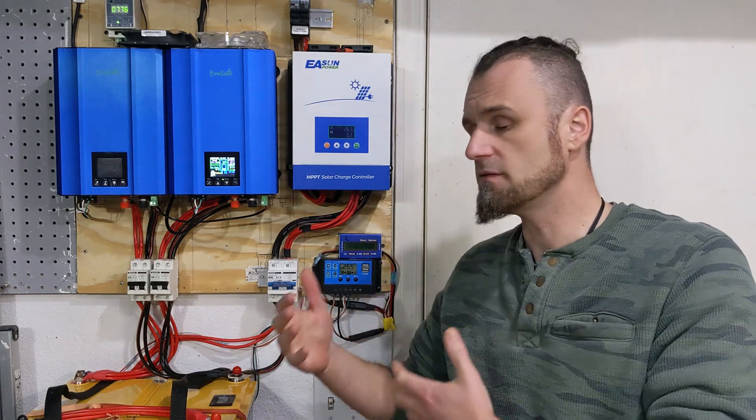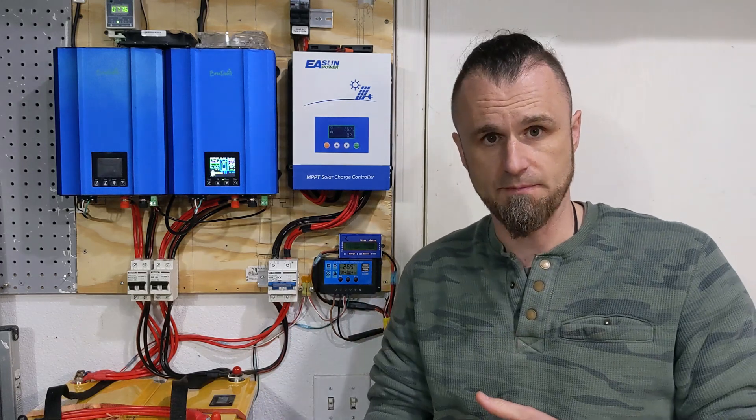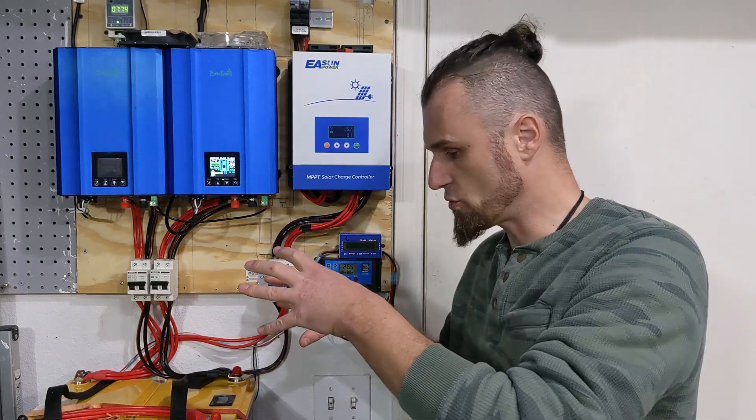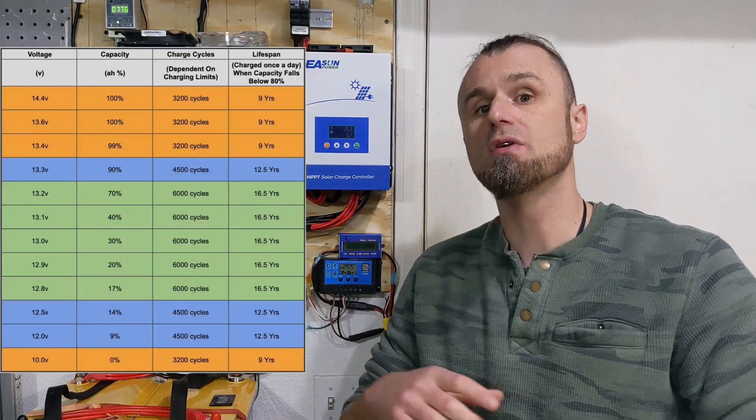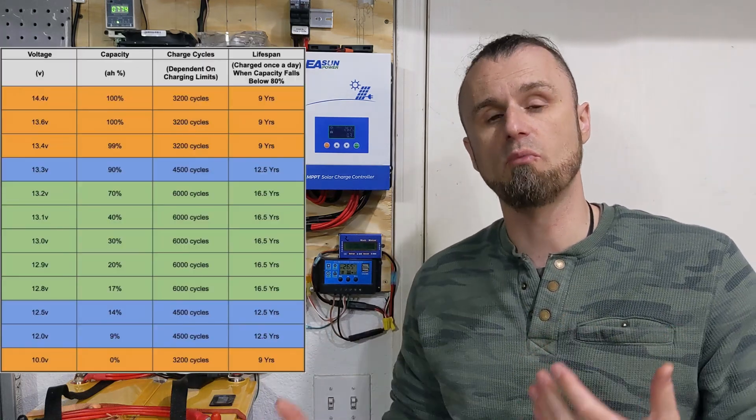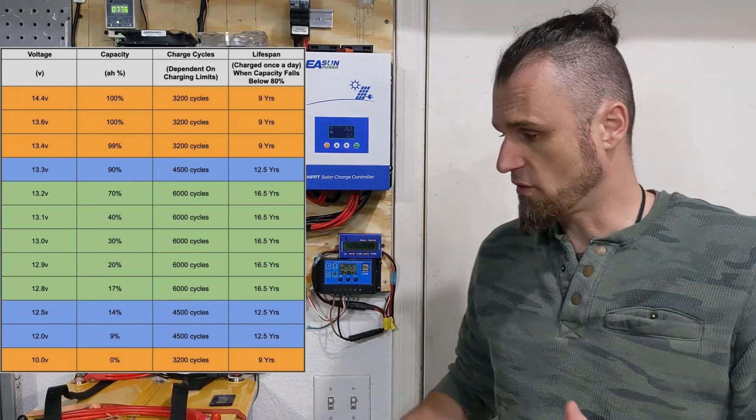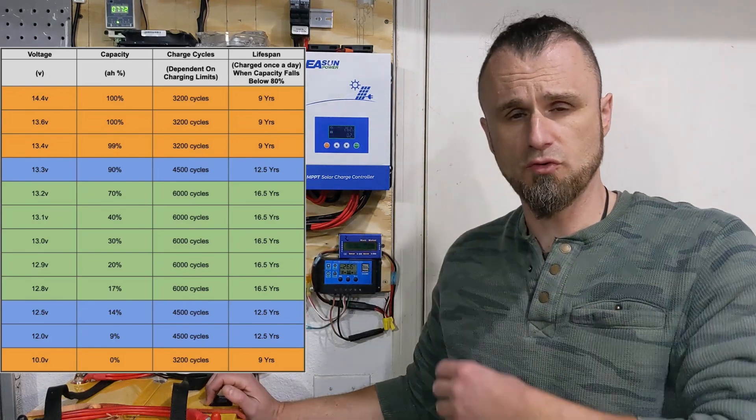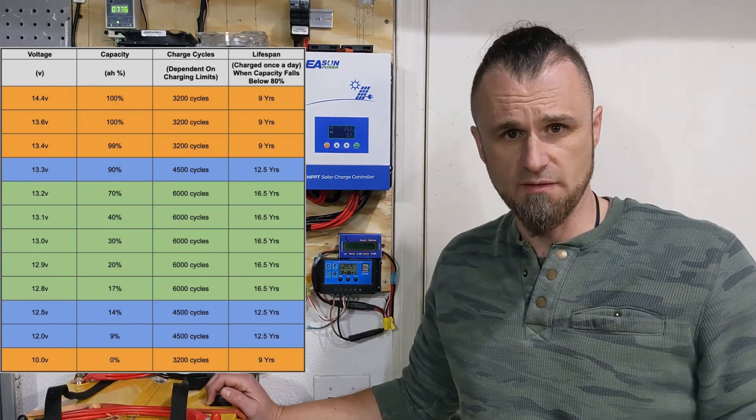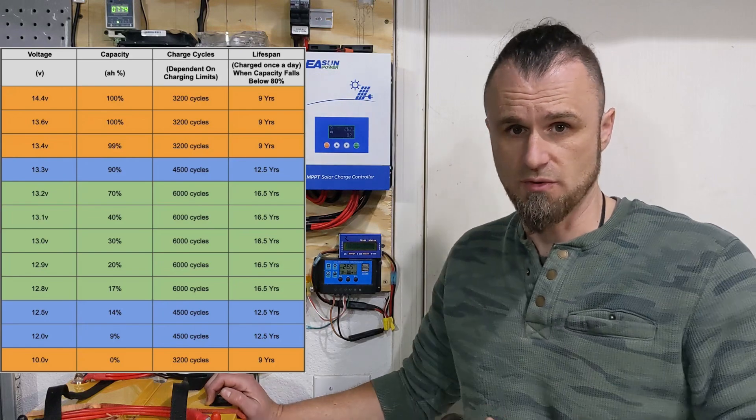But based on a lot of the information that is available on the internet, there are certain voltages that you could run these batteries at that will extend their life a lot more than regular. The charge controller can be programmed for certain voltages, and I'm talking to a 24 volt system, all you have to do is just cut everything in half.